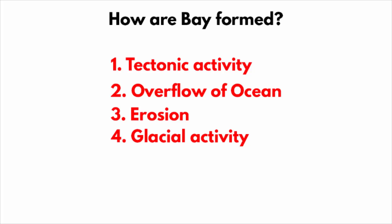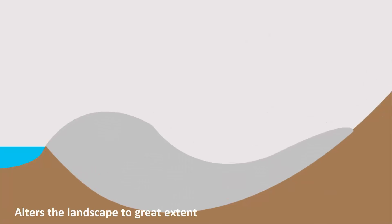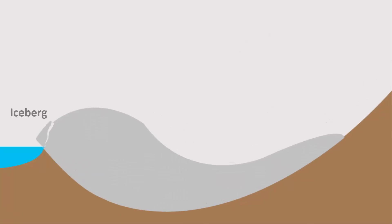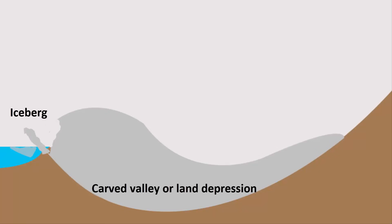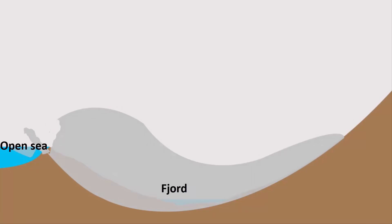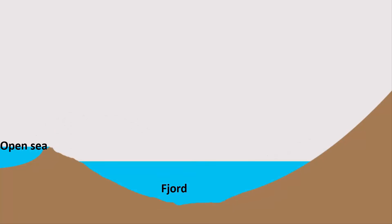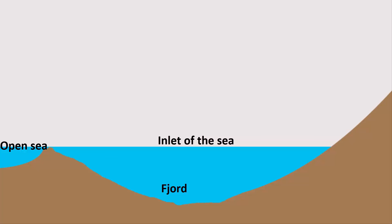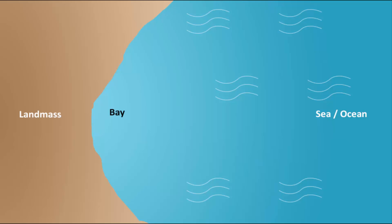Fjords are formed by the slow movement of glaciers. A glacier slices through the bedrock of an area, leaving a long, steep canyon which gets filled up with sea water. So if the shape of a fjord is such that the land looks like a semicircular shape, only then we can call that fjord a bay.